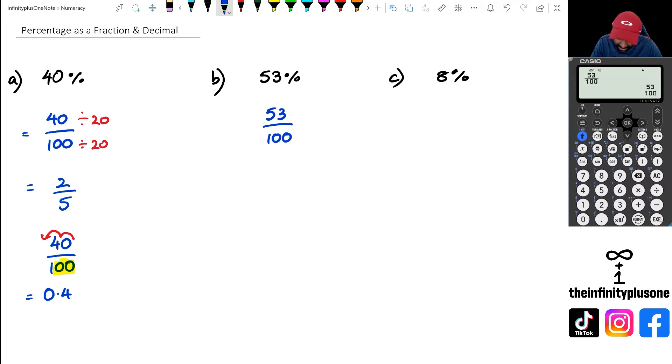Now that's it as a fraction. So as a decimal we look at the number of zeros that we have, which we've got two, so we should be able to move the decimal point two spots. So 53 as a decimal is going to be 0.53.